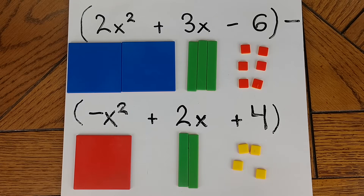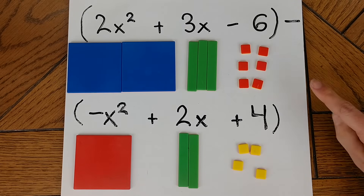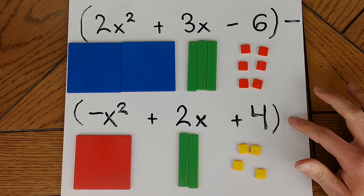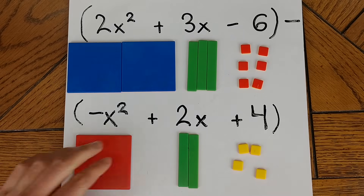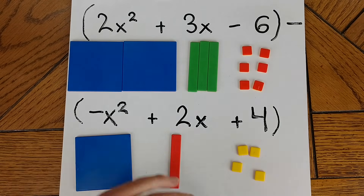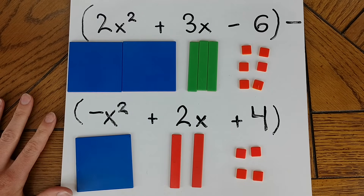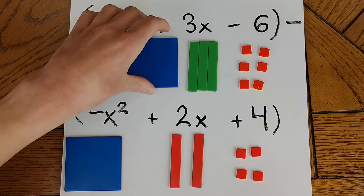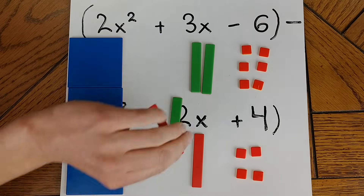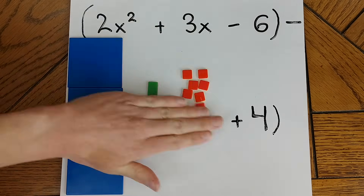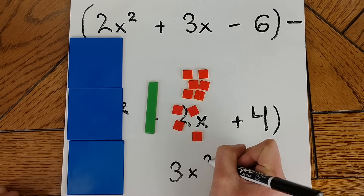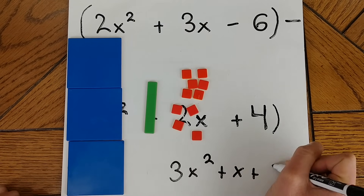When subtracting polynomials, we start out the same way by modeling each polynomial with the algebra tiles. Then what we want to do is take the polynomial that's being subtracted and flip over or change the sign of every tile in that polynomial. Once we've done that, we go through the same process of combining like tiles and canceling out any positive-negative pairs. That's going to leave us with our final answer of 3x squared plus 1x plus 10.